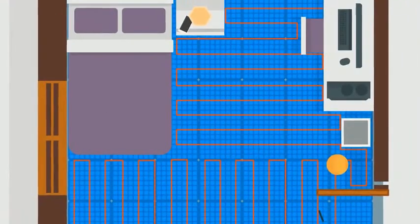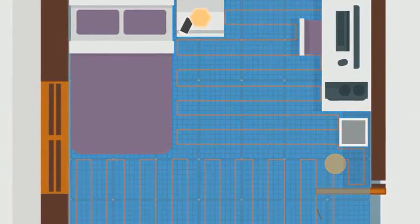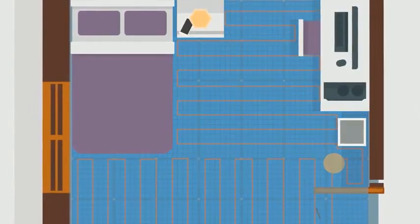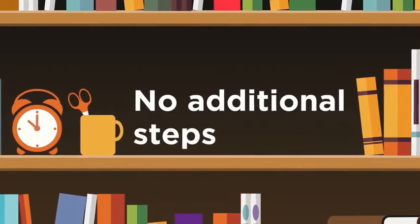Install the floor heat cable in areas where heat is desired, and the floor surface can be laid right on top of it. No additional steps are required.